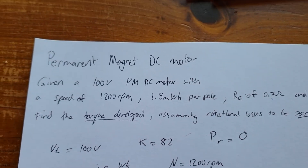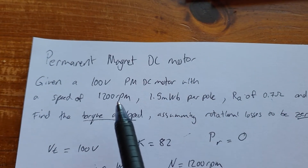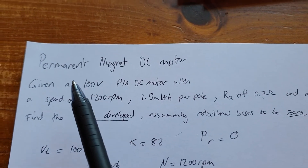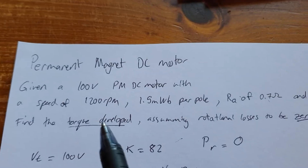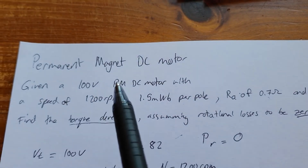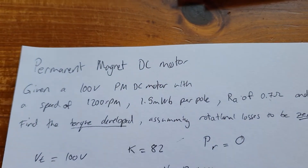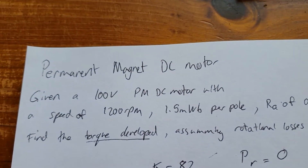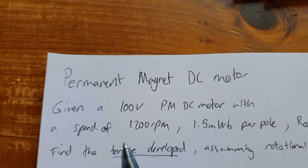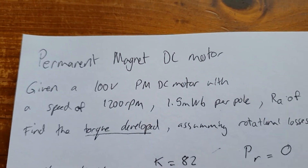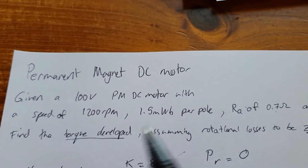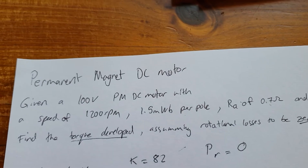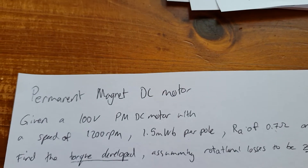Hey guys, so today I'm going to do an example question of a circuit analysis of a permanent magnet DC motor. So here I have the example question. We're just going to start off nice and easy finding just one thing.